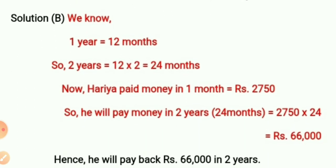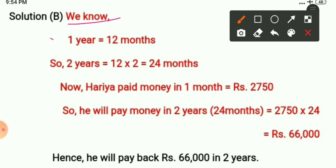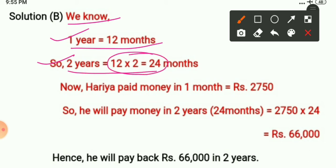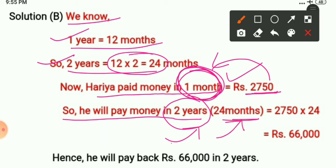For the solution, first write: one year = 12 months, so two years = 12 × 2 = 24 months. Haria pays 2750 rupees in one month. We need to find what he pays in 24 months. Since the loan amount is given per month, we convert years to months so we can compare one month to 24 months. This is one-to-many, so we multiply.